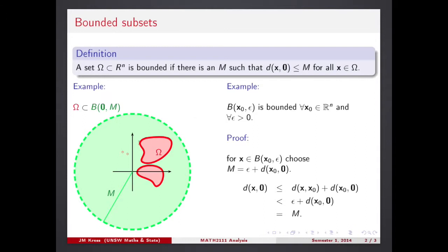So, if this red spot here is your omega, any point within the omega from the origin is no longer than distance M. Or, geometrically speaking, you just entirely submerge your red spot, your omega, into this green ball which sits in the origin.